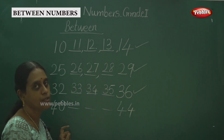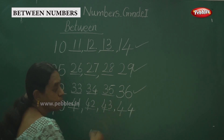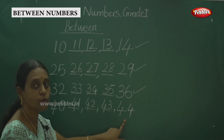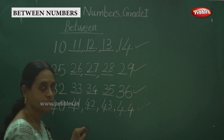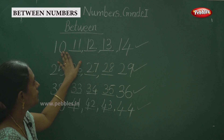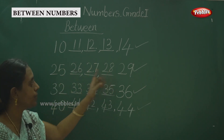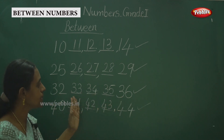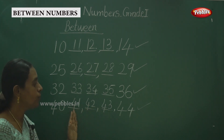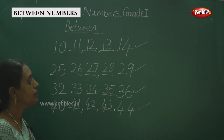And 40: 41, 42, 43. Finally 44. So this is the way we have to write the between numbers. Between numbers 10 and 14 — completed. Between 25 and 29. And 32 to 36 between numbers. And in between 40 and 44: 41, 42, 43. So this is the way — before number, after number, and between numbers.